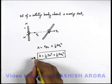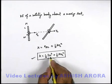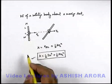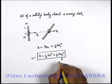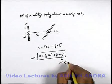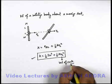Be careful that the expression is valid only if the body is rotating about its center of mass, and here v_c is the velocity of the center of mass of the body.